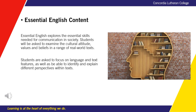In Essential English, students explore the essential skills needed for communication in society. Students are asked to examine the cultural attitudes, values and beliefs in a range of real-world texts. Students are asked to focus on language and text features as well as be able to identify and explain different perspectives within texts. At its heart, Essential English asks students to identify messages and perspectives and to consider the way in which these perspectives have been created by authors.